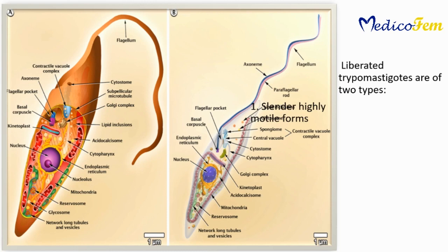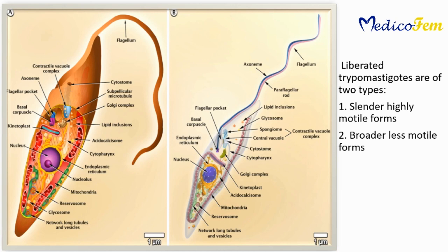Slender highly motile forms have an elongated nucleus, subterminal kinetoplast, and short free flagellum. They are the invasive form and migrate to many organs, penetrate cells, and continue the life cycle. Broader less motile forms have an oval nucleus, terminal kinetoplast, and long free flagellum. They persist in the blood and are taken up by the insect vector during a blood meal.